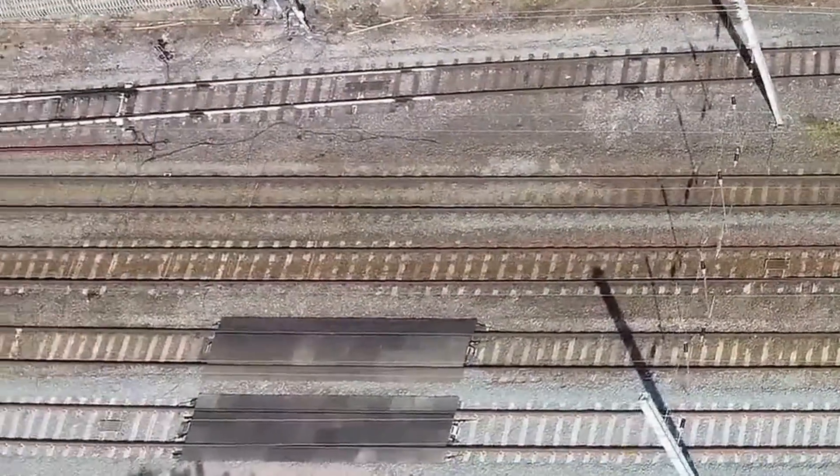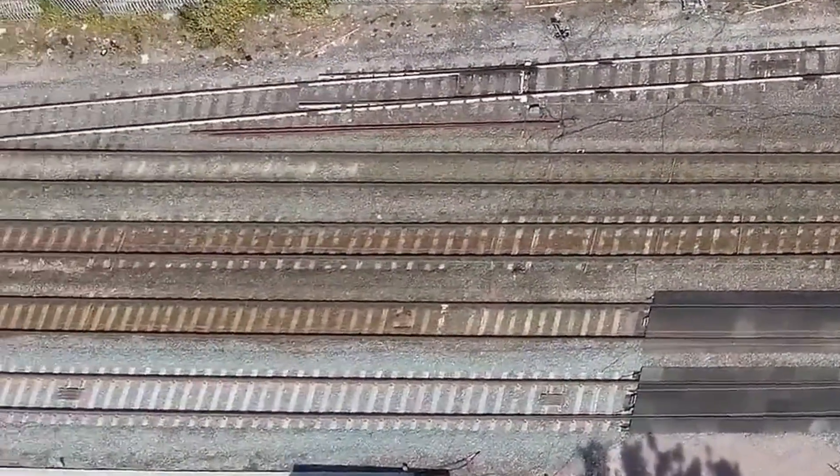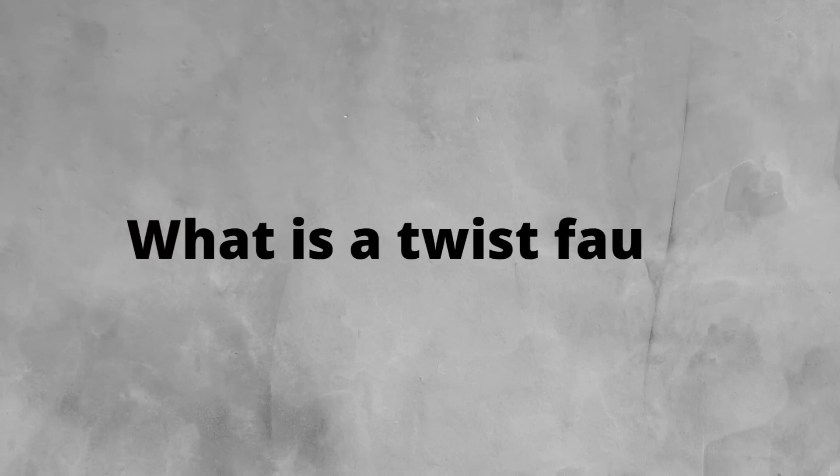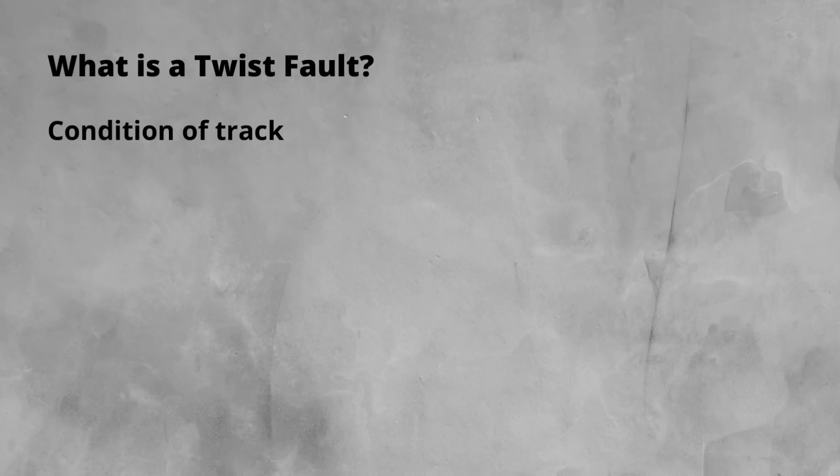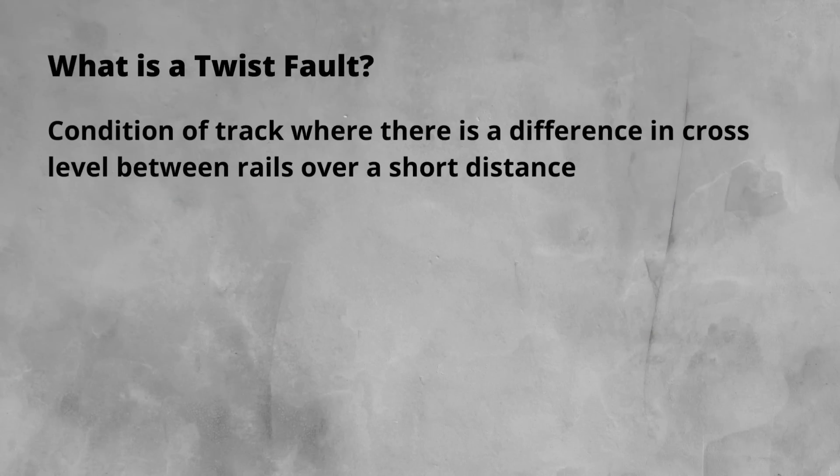One of the most serious track geometry faults is a twist. So what is a twist? A twist fault is a condition where there is a difference in cross levels between the rails over a short distance of track.